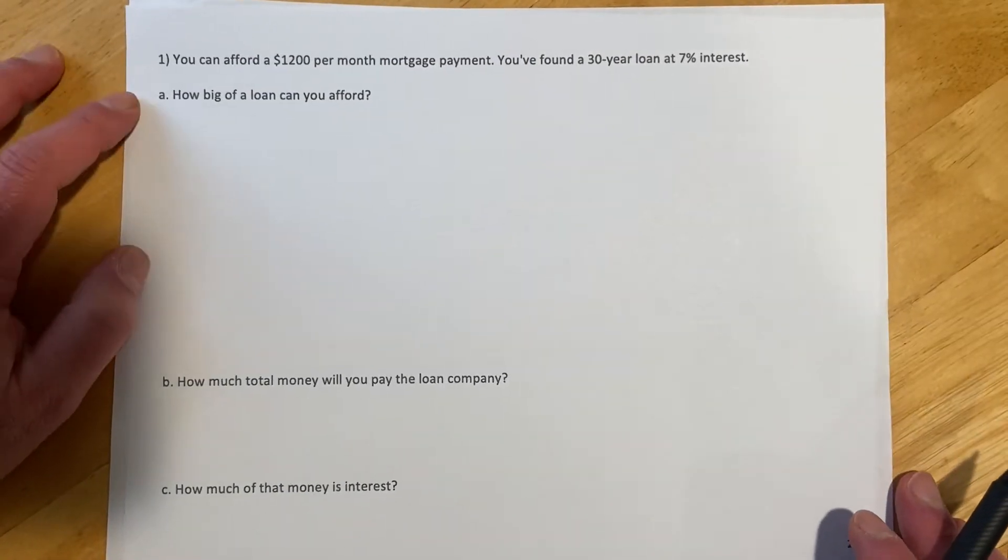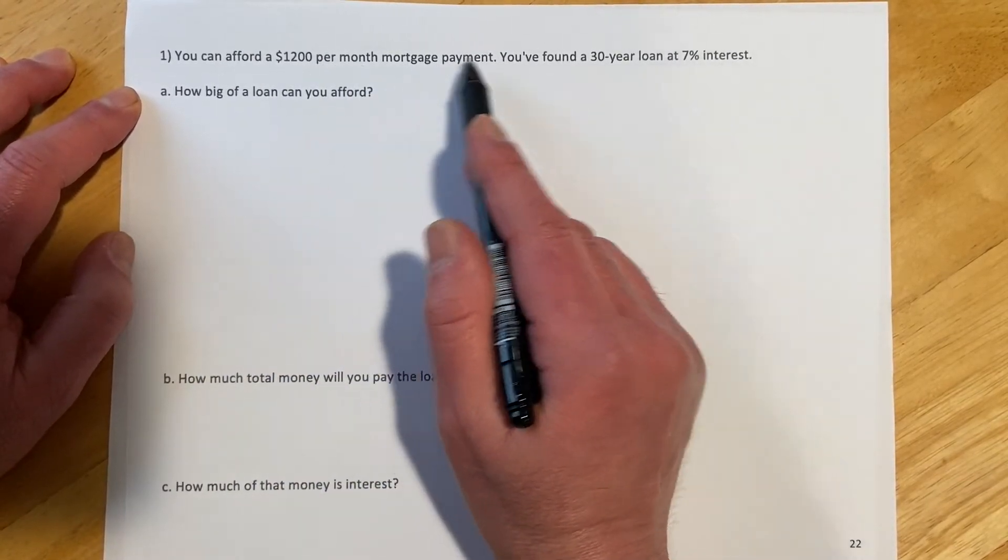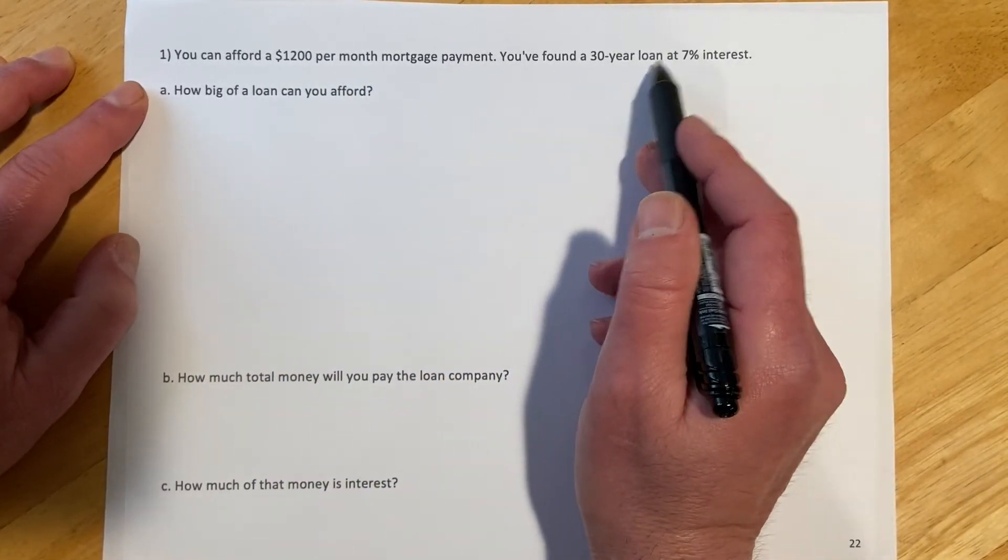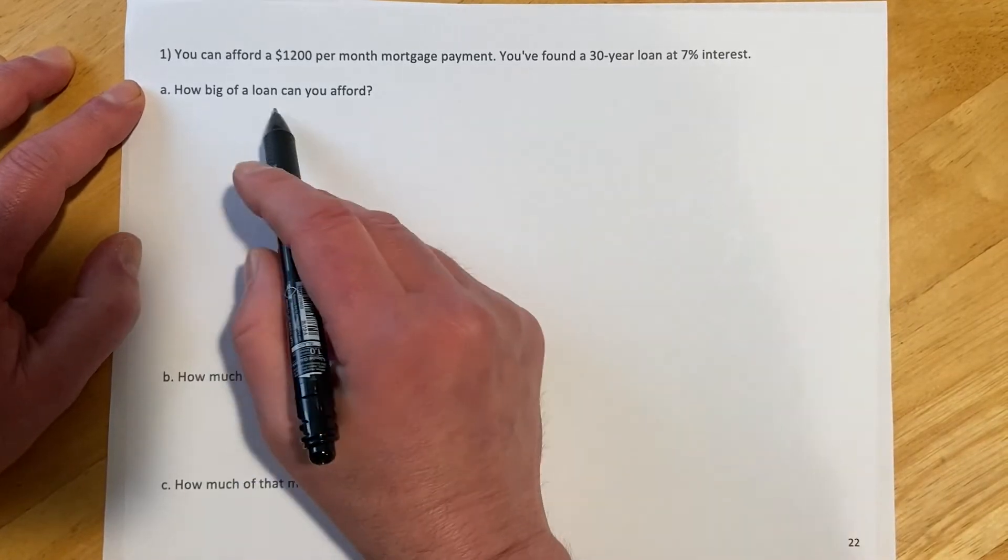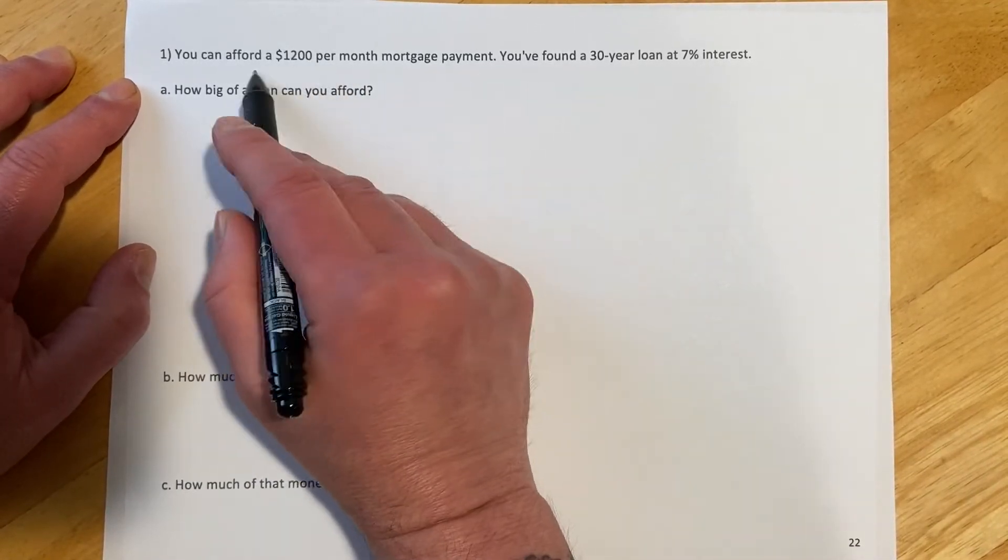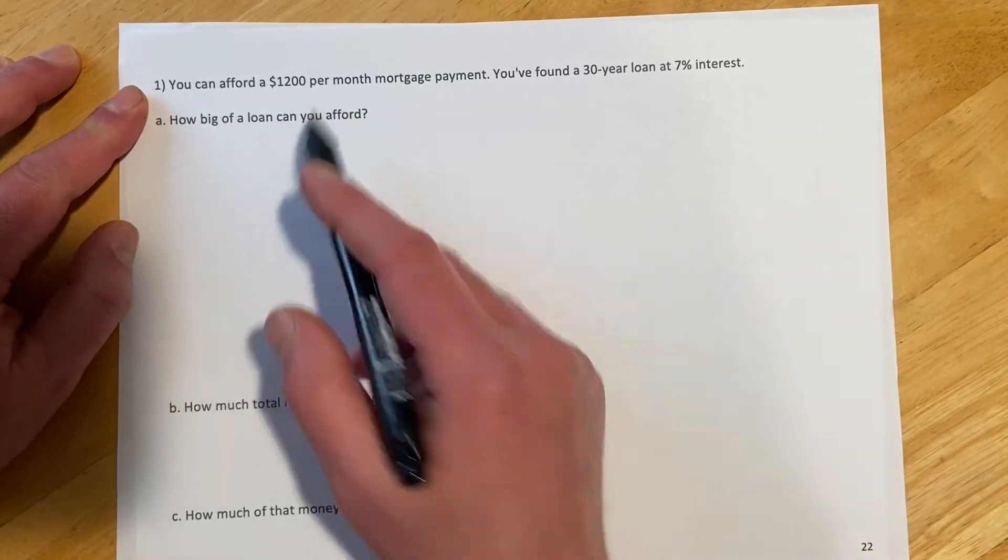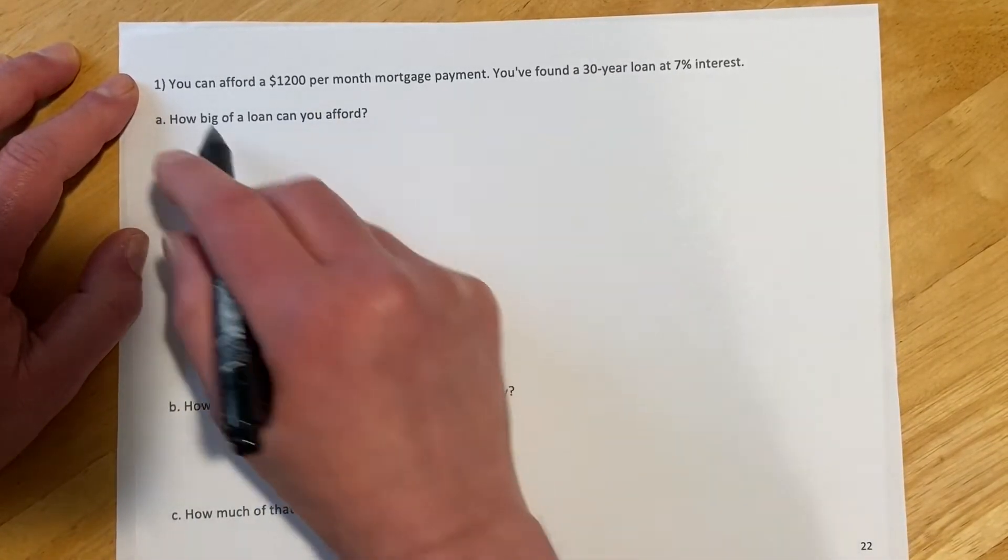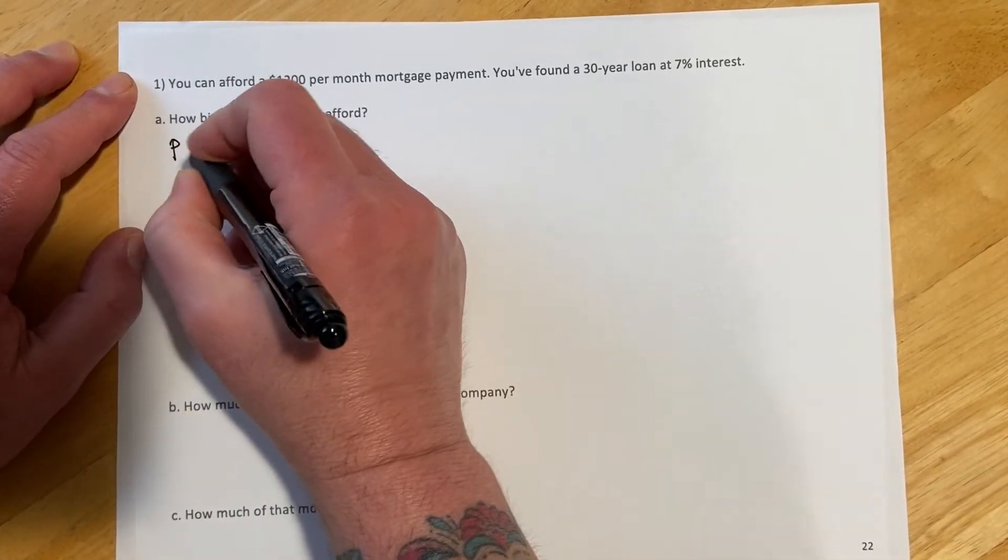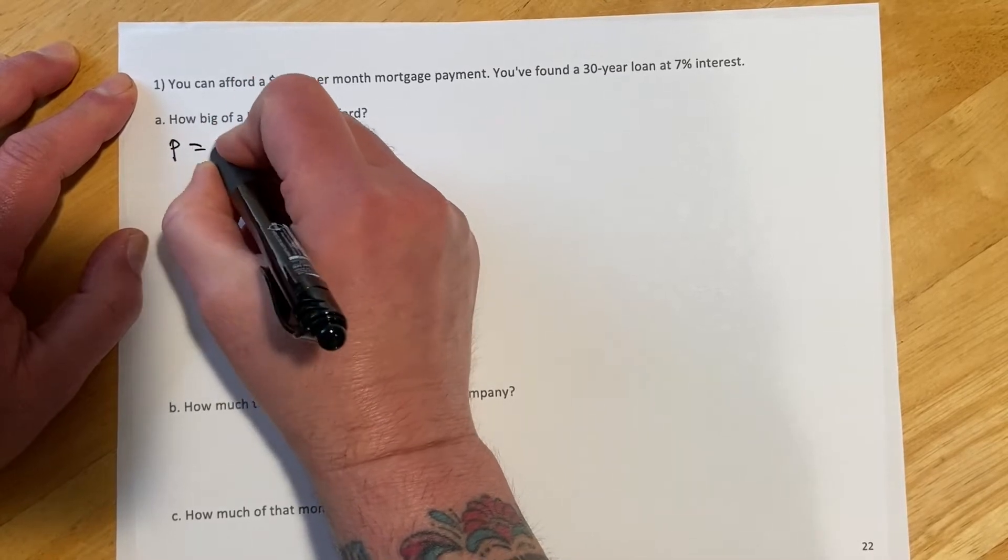This first example we have, you can afford a $1,200 a month mortgage payment. You found a 30-year loan at 7% interest, so how big a loan can you afford? So you know what your budget looks like, and you know your terms, and you're wondering how much money you can borrow. So let's see, payments are going to be $1,200.